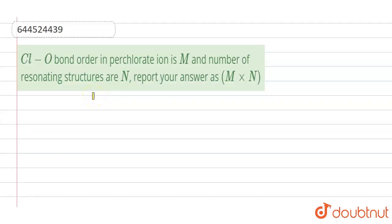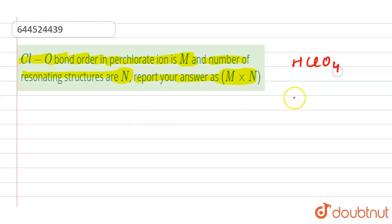The question is: the CLO bond order in perchlorate ion is m, and the number of resonating structures are n. Report your answer as m cross n. The perchlorate ion is present in HClO₄, that is perchloric acid. The perchlorate ion is ClO₄ minus.